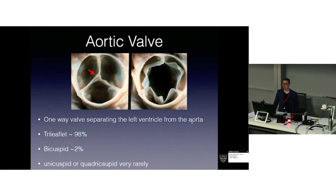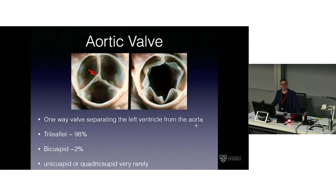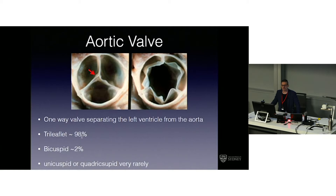The aortic valve is a one-way valve separating the left ventricle from the aorta. It opens during systole and closes during diastole. In the vast majority — 98% — it has three cusps. It's bicuspid in just under 2%, and then there are unicuspid or quadricuspid valves very rarely.